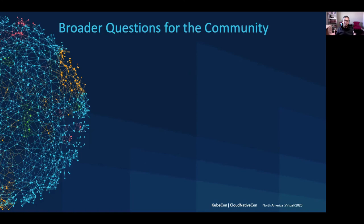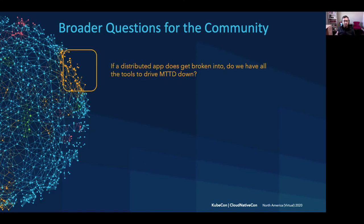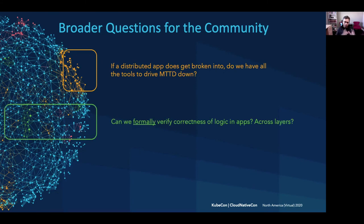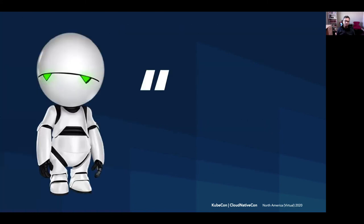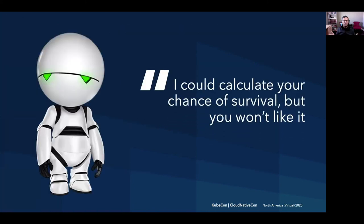Some of the broader questions we have to ask ourselves as a community: if a distributed app does get broken into, do we have all the tooling to drive mean time to detect and debug down? Can we formally model and verify the correctness of the logic in our business apps, even across layers? Can we, the community, help spread the word on API misuse? If we aren't able to step up to the plate and answer these questions, I'm afraid Marvin has this to say to you.